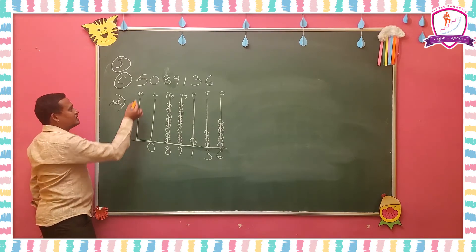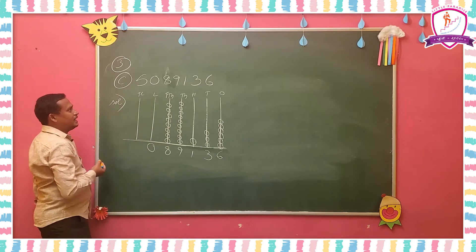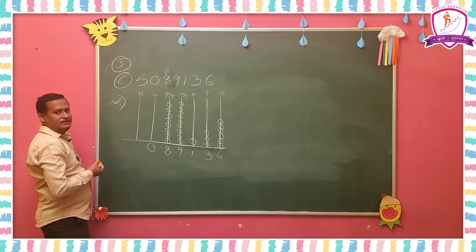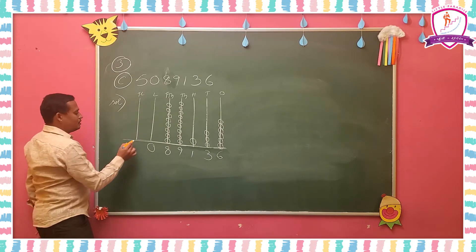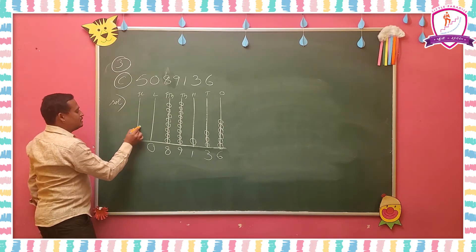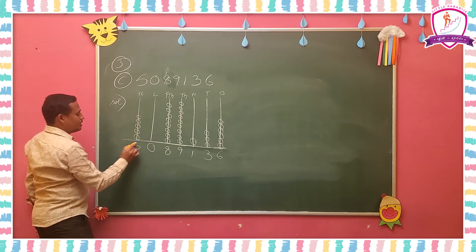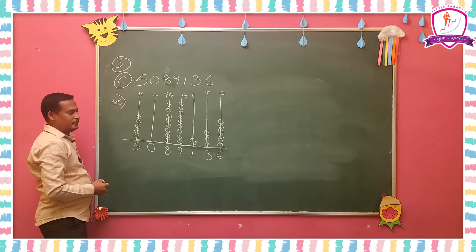And in the ten lakhs place, five is there. You have to draw five bits and write 5 there.